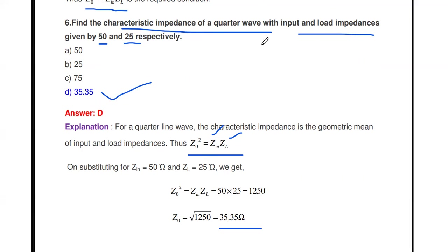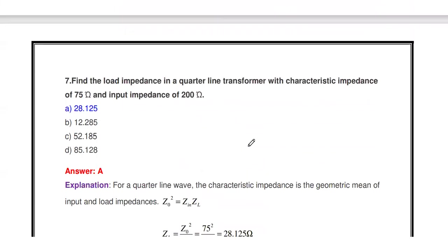Instead of load impedance, in some problems Z₀ and ZL are given and we have to find the input impedance, or Z₀ and Zin are given and we have to calculate ZL. So there are three different types of problems based on this formula.